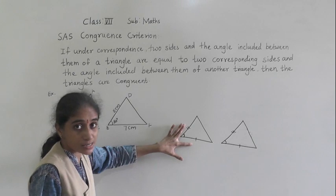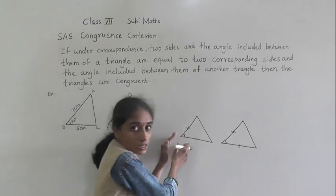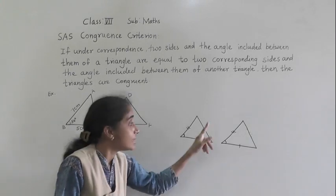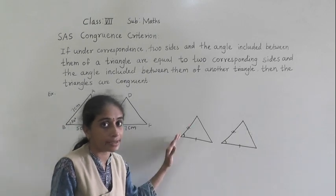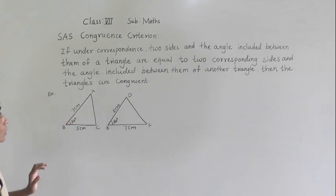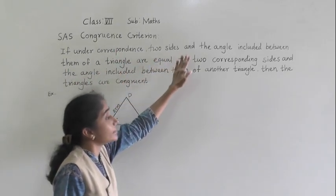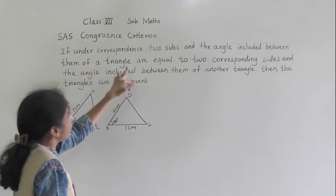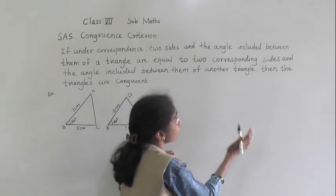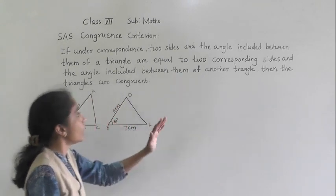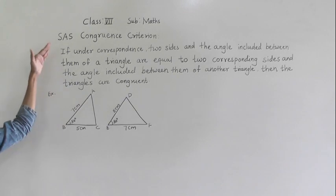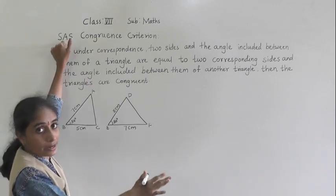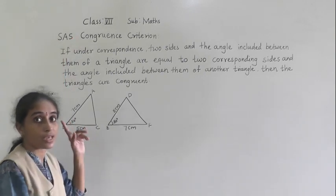So, two corresponding sides of these triangles and the included angle — if it is equal to the two corresponding sides of another triangle and the included angle — then both triangles are congruent by SAS: side, angle, side. Understand what is SAS congruence criterion: if under correspondence two sides and the angle included between them of a triangle are equal to the two corresponding sides and the included angle of another triangle, then the triangles are congruent. This criterion shows two sides and one included angle — if equal to the corresponding two sides and included angle of another triangle, then the two triangles are congruent by SAS criterion.